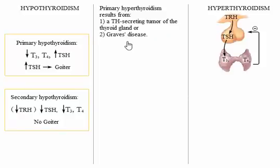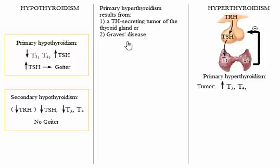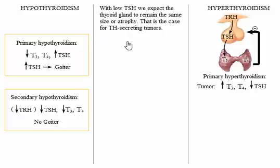Let's look now at primary hyperthyroidism. In both cases, the amount of T3 and T4 secreted increases. As plasma levels of thyroid hormone rise, the inhibition to the anterior pituitary increases, and the anterior pituitary secretes decreasing amounts of TSH. Because of the hormone pattern observed, we expect that primary hyperthyroidism will not produce a goiter. With low TSH and the concomitant loss of its tropic actions on the thyroid gland, we might expect the thyroid gland to remain the same size or atrophy. That is the case for thyroid hormone-secreting tumors.